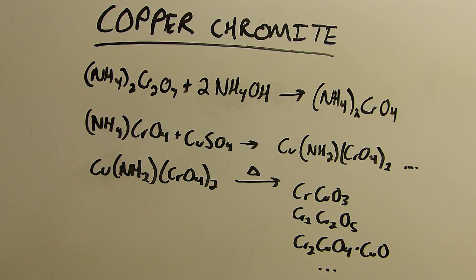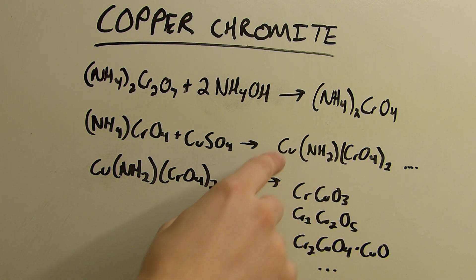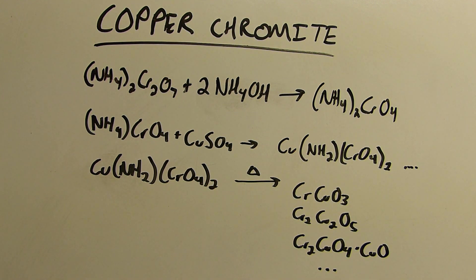I'll be making the catalyst using the following series of reactions. The main reaction to note is the reaction between ammonium chromate and copper sulfate to precipitate a copper ammonium chromate, and then the copper ammonium chromate will decompose when heated to form these various copper chromite compounds, which is the target that we're after.